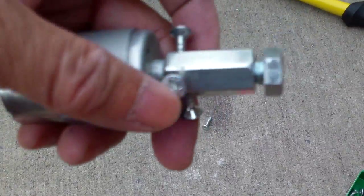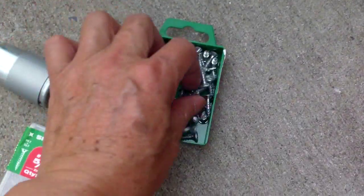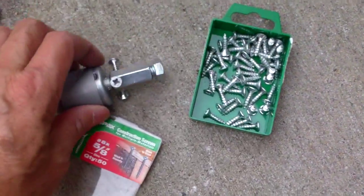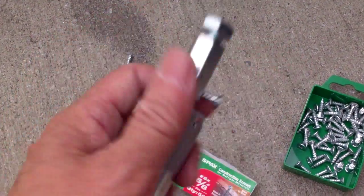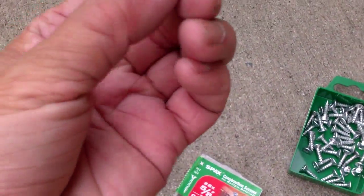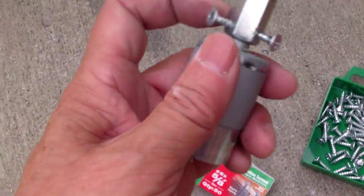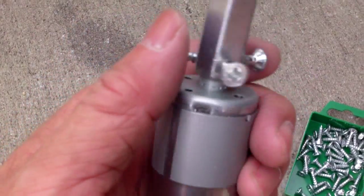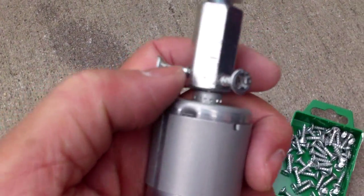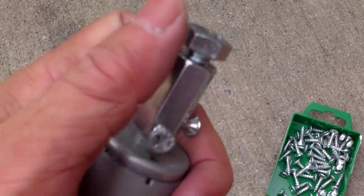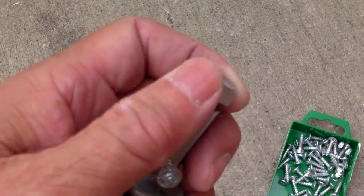I use some self-tapping screws and I drill the hole in here on three sides and then I cut up the tip of the screw and then I screw them in on all three sides so that it holds against the shaft of the motor and then I have this big nut here.